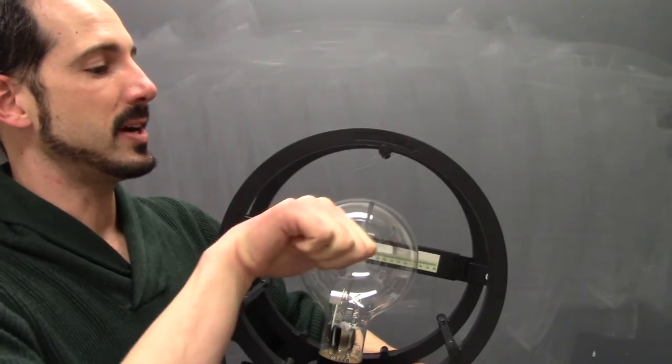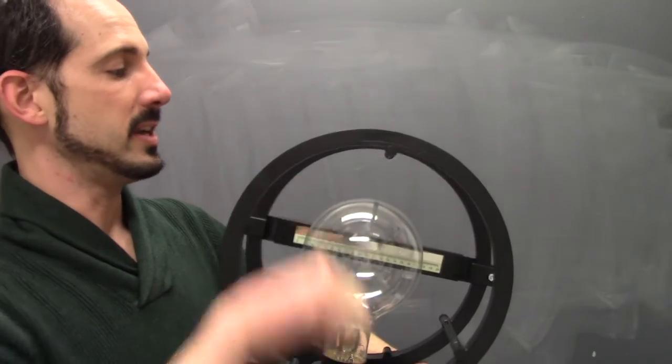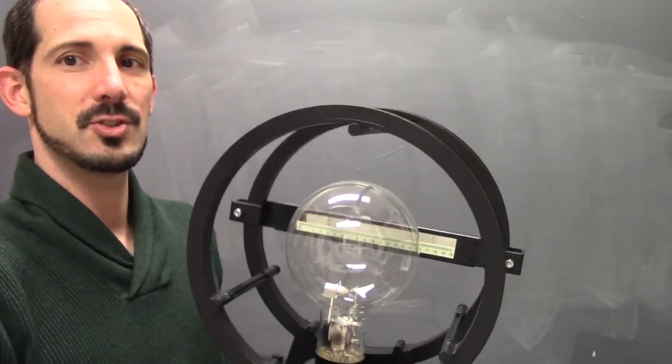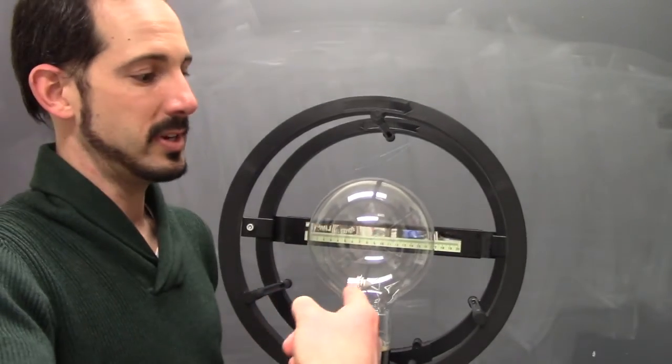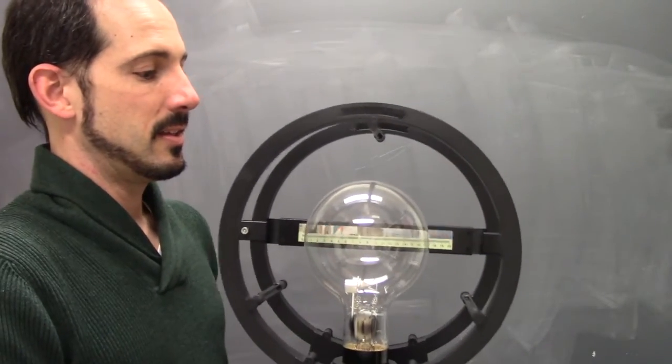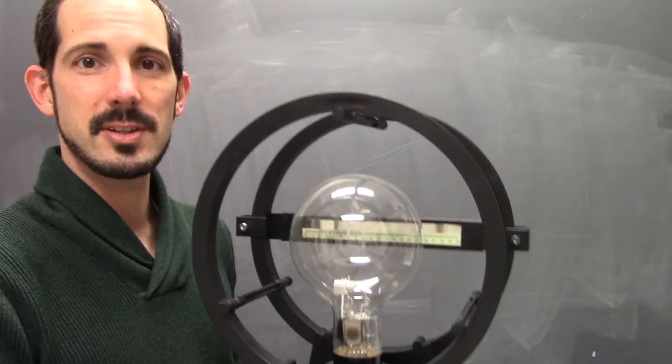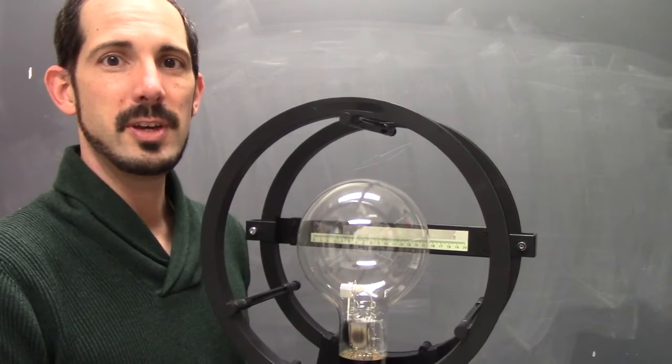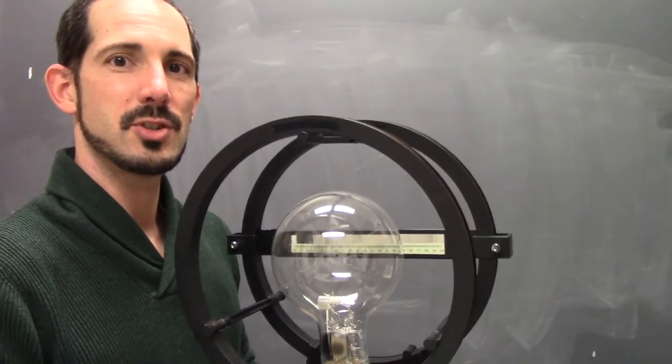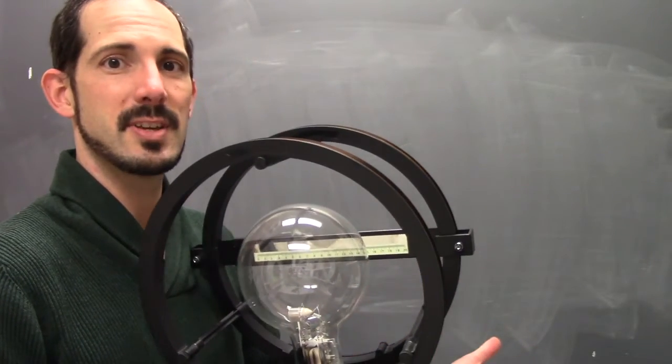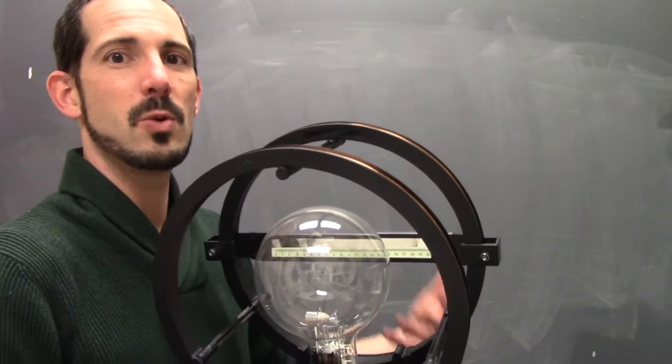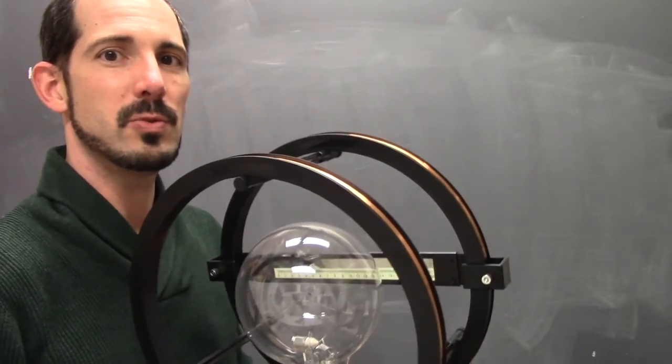So if you have the current going clockwise, that's going to produce a field that is going in. So now you have charges coming this way, you have magnetic field going in. That's going to produce the Lorentz force of qv cross b. You have the charges are moving perpendicular to the field, and that's going to create a force that is perpendicular to both of those, which can cause these charges to move in a circle.